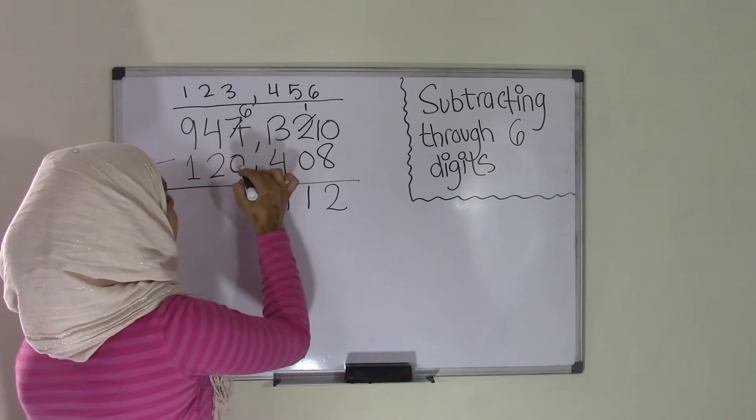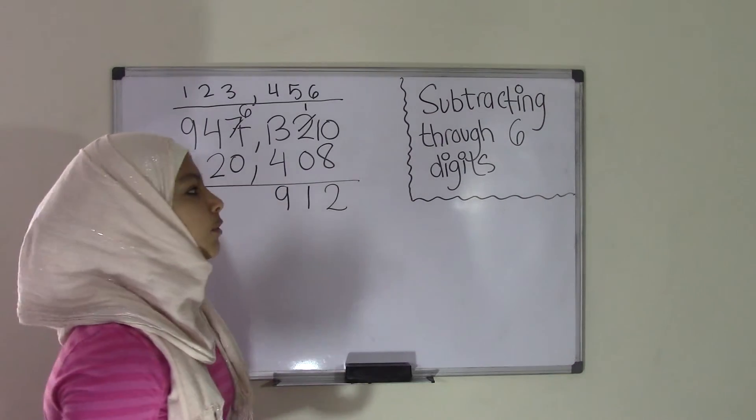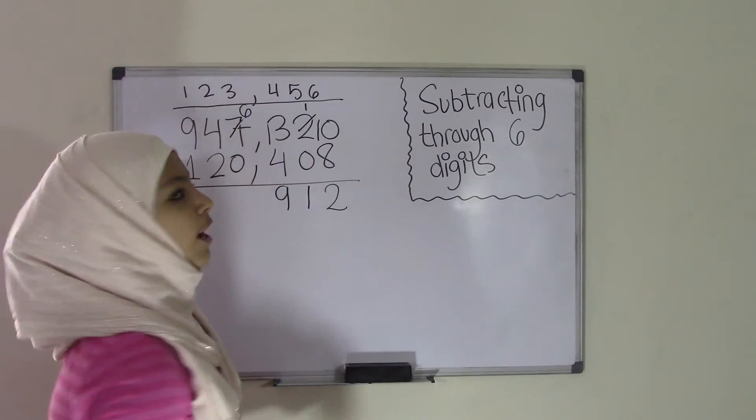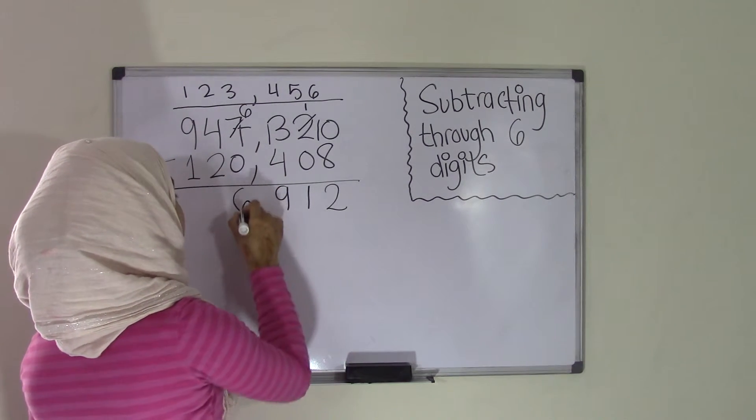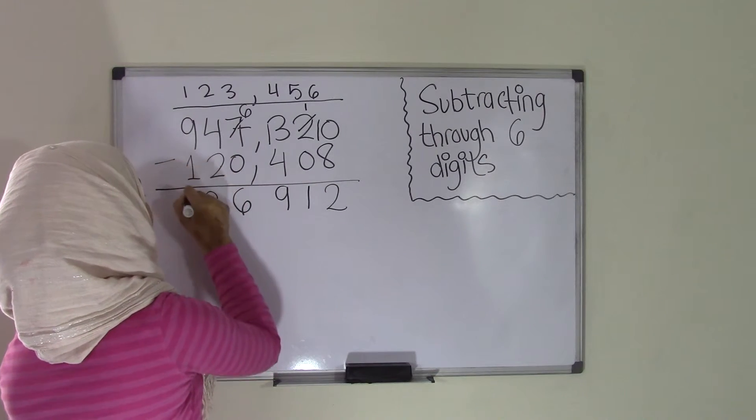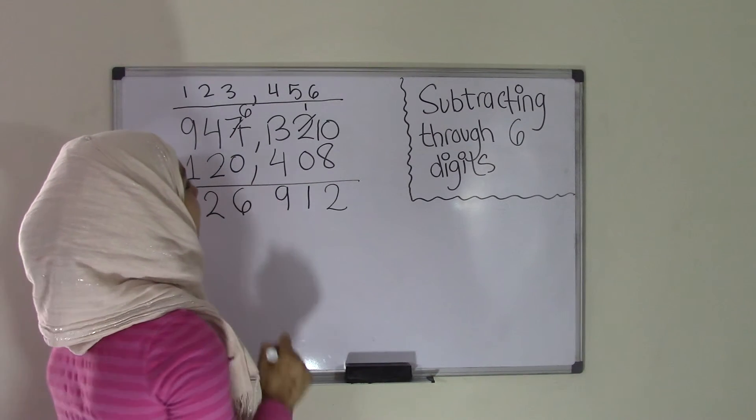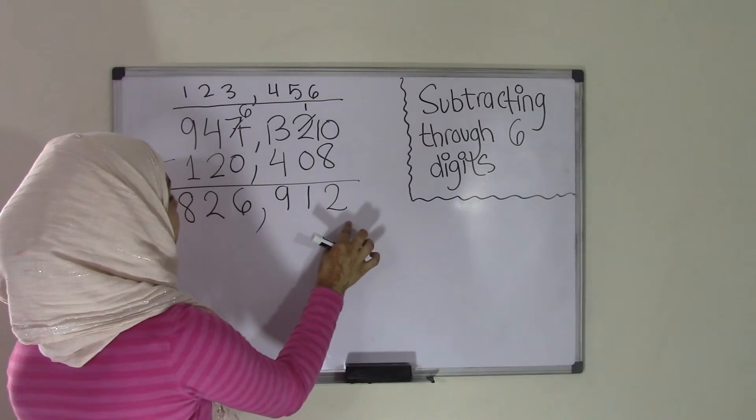And now we have 6 minus 0. And we know that any number subtracted from 0 is that number. So 6 minus 0 is 6. Now we have 4 minus 2, which is 2. And 9 minus 1, which is 8. So we get our answer of 826,912.